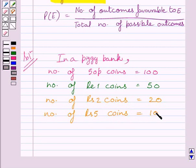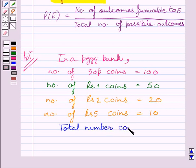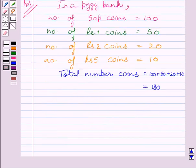Now, total number of coins is equal to 100 plus 50 plus 20 plus 10, which equals 180. One coin can be chosen in 180 ways, so total number of possible outcomes is equal to 180.